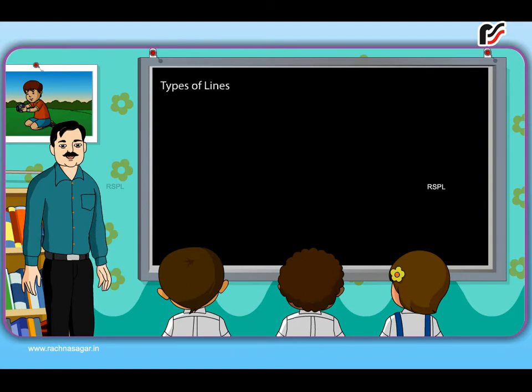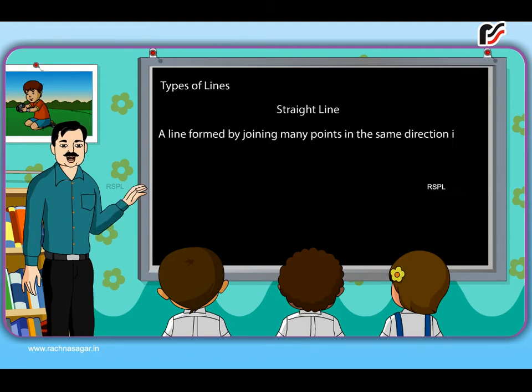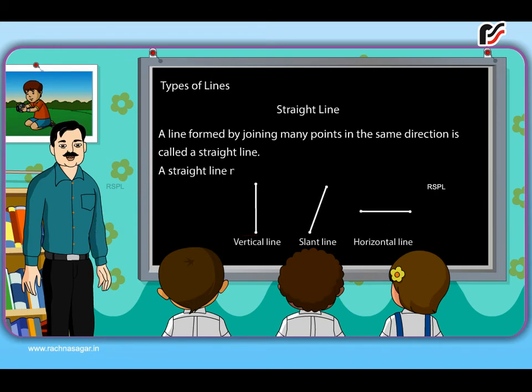Types of Lines. Straight line. A line formed by joining many points in the same direction is called a straight line. A straight line may be vertical, horizontal or slant.